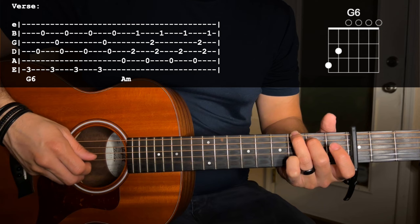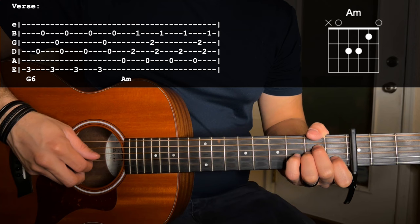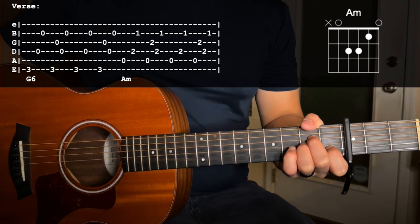And then you're going to repeat the A minor one more time. And then you repeat the entire progression again. So I'll play it all together a little bit slower, and then I'll play at regular speed.